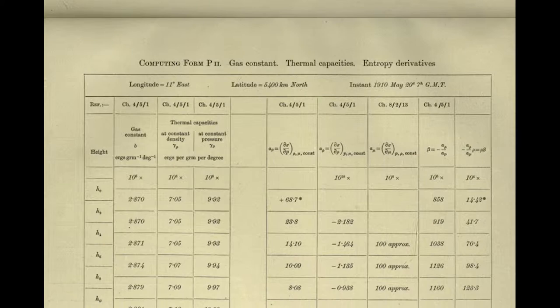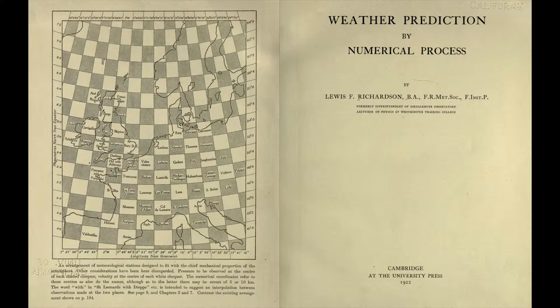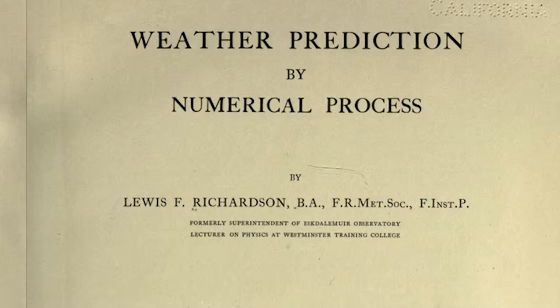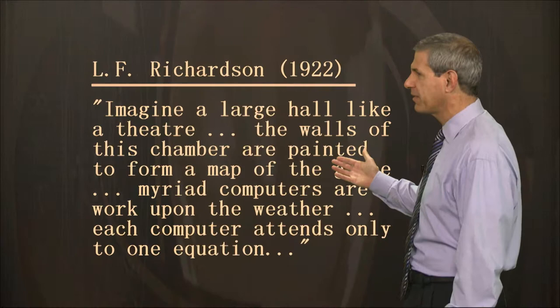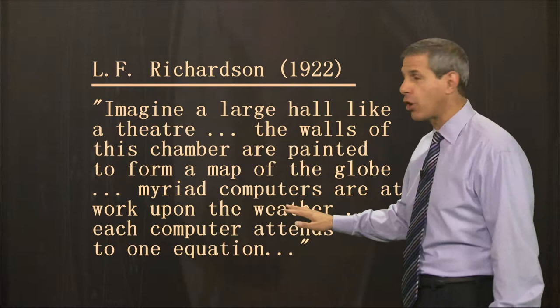But Richardson was on to something. In a 1922 book called Weather Prediction by Numerical Process, he proposed a forecast factory with 64,000 human computers, each responsible for a small part of the globe. He wrote: 'Imagine a large hall like a theater. The walls of this chamber are painted to form a map of the globe. Myriad computers are at work' — he means humans — 'upon the weather. Each computer attends only to one equation.'